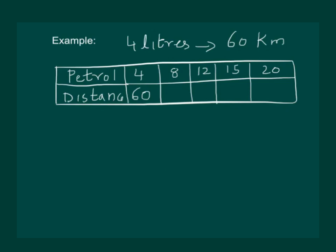To calculate distance travelled when we have 8 litres of petrol: when we had 4 litres, we could travel 60 kilometres. Now we have double the amount of petrol, so the distance travelled has to be double, meaning we will cover 120 kilometres with 8 litres of petrol. Similarly, if we have 12 litres of petrol, we can see that 12 is 3 times 4. Hence, distance travelled will also be 3 times, that is 180 kilometres.